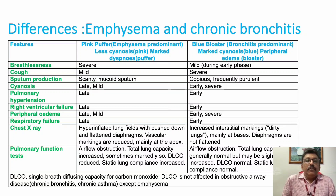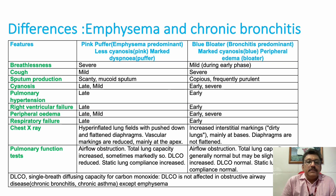Emphysema-predominant patients are called 'pink puffers' — less cyanosis, marked dyspnea. Bronchitis-predominant patients are called 'blue bloaters' — marked cyanosis and peripheral edema. Breathlessness is severe in emphysema; cough, sputum production, cyanosis, pulmonary hypertension, right ventricular failure, and peripheral edema are all earlier in bronchitis, largely due to right ventricular failure and protein loss through sputum. Respiratory failure also occurs earlier in bronchitis.